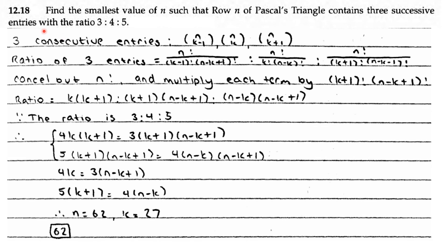AoPS Counting and Probability 12.18: Find the smallest value of n such that row n of Pascal's triangle contains 3 successive entries with ratio 3 to 4 to 5. If they are 3 successive entries, they can be written as n choose k minus 1, n choose k, and n choose k plus 1.